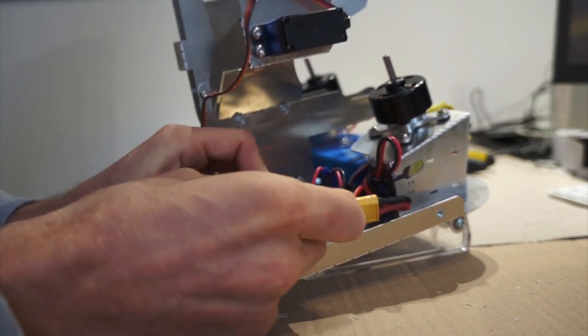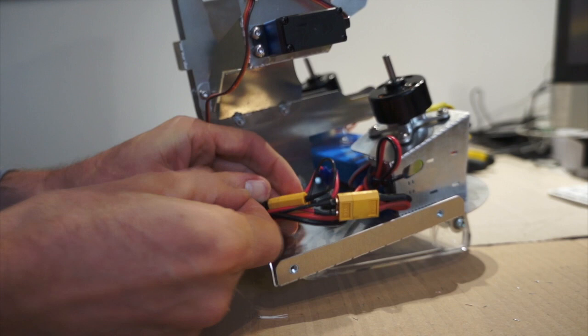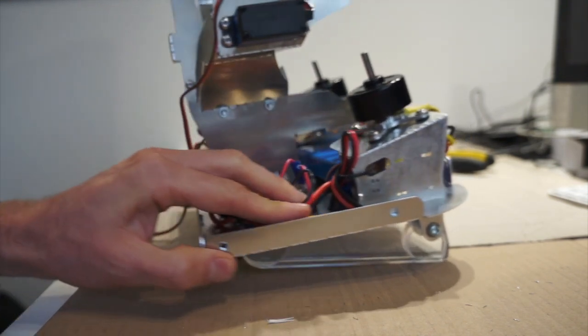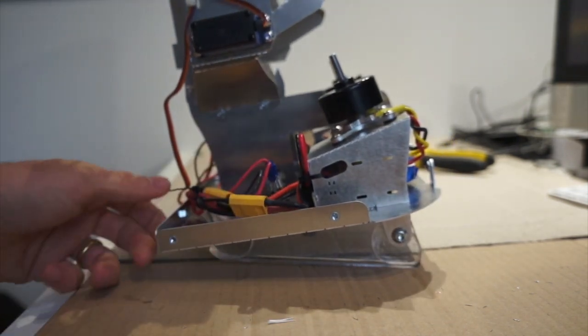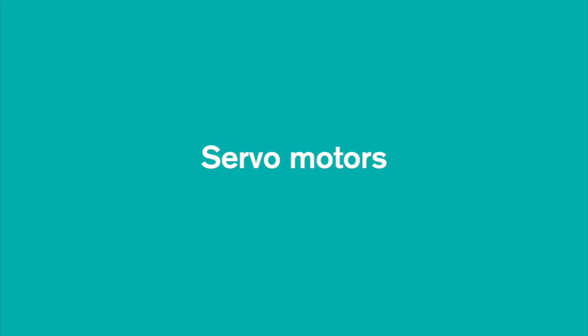As usual you can use the plastic collars to tidy up and stow the wires. We want to keep a low level for the wires to prevent them to touch the turning wheels.